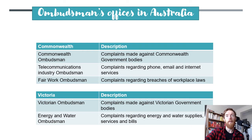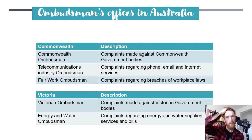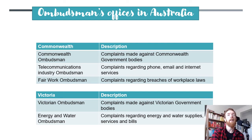Some other Ombudsman offices in Australia: the Commonwealth Ombudsman takes complaints made against Commonwealth Government bodies. The Telecommunications Industry Ombudsman takes complaints regarding phone, email and internet services — there's been a lot going towards that recently about Telstra, because Telstra has been doing terribly even though they're the most expensive telco.